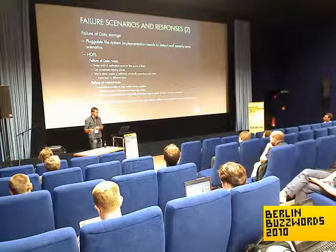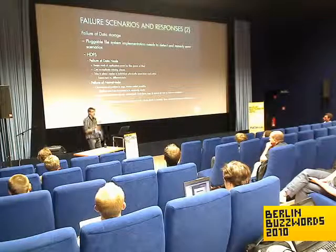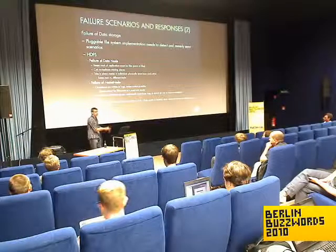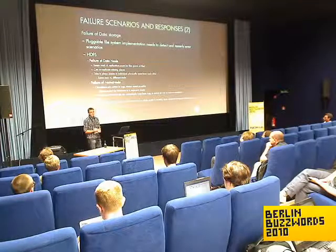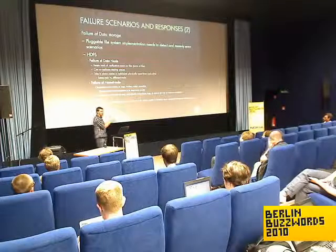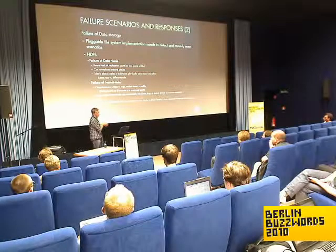Each data node reports back to the name node saying 'I'm still here, these are the files I have.' If a data node goes, the name node observes this, checks whether the replication count is still valid for the different files and directories, and if not it issues a re-replication. The standard is set to three replicas of a given chunk of a file. This is built into the design of HDFS and works well.